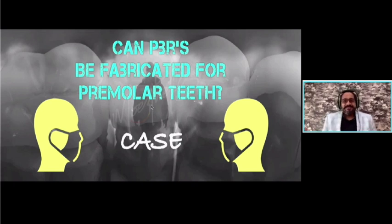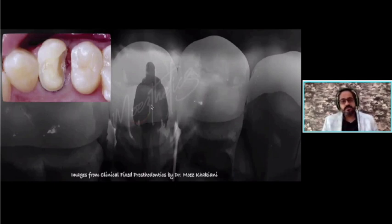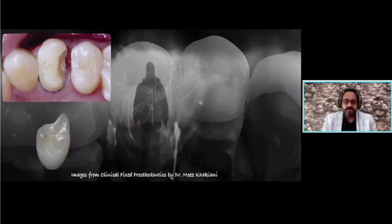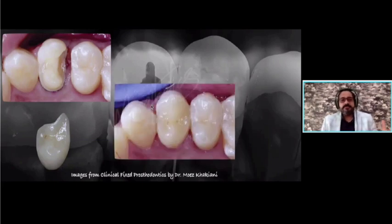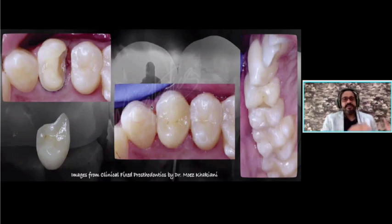Can PBRs be done for premolar teeth? Yes. Here is a post-endo premolar with distal caries. The distal caries was restored with composite. Only the distoproximal and palatal margin were created; the palatal cusp was reduced 1.5 mm because the buccal cusp was thick and intact — no need to reduce it. The prosthesis is partial: it replaces compromised tooth structure without encroaching on good viable tooth material. Once bonded, it becomes part of the original tooth structure, and the junction is impossible to trace. PBRs can be done for molars, premolars, vital teeth, and endodontically treated teeth.